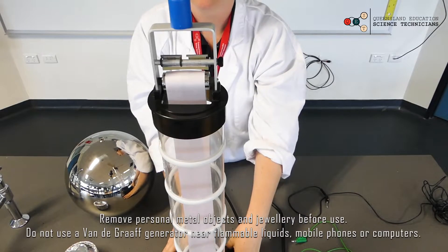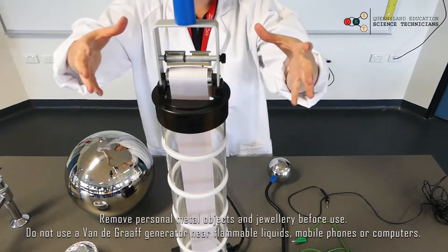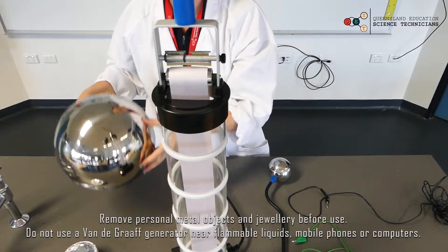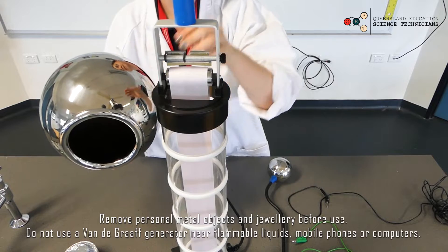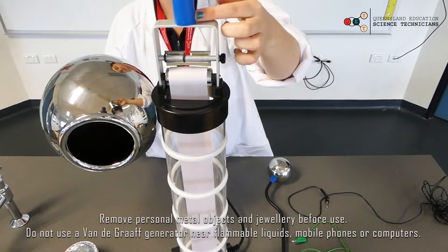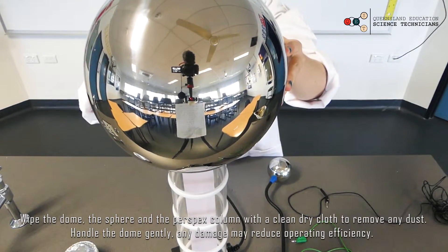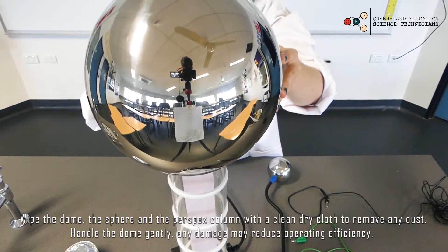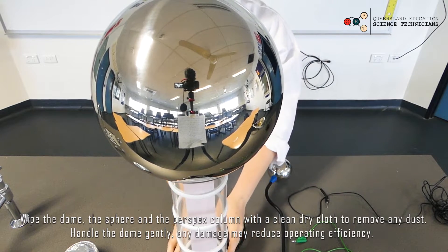The next step to putting your Van de Graaff together is to put this main dome onto the top. Inside the dome there is a little spike and that spike just needs to go into a hole in this blue part at the top of the bracket. So just move it around until you feel it slide into the hole and once it's in it's fairly solid.